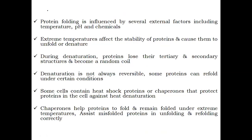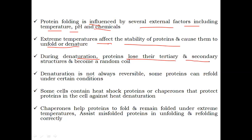Protein folding is influenced by several external factors including temperature, pH, and chemicals. Extreme temperatures affect the stability of proteins and cause them to unfold or denature. During denaturation, proteins lose their tertiary and secondary structure and become a random coil — that is, they become unfolded.